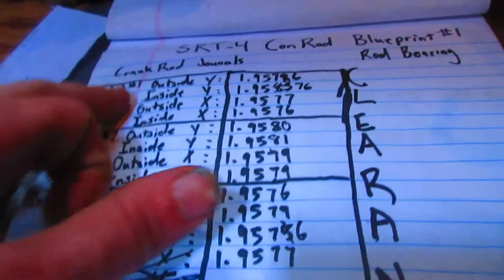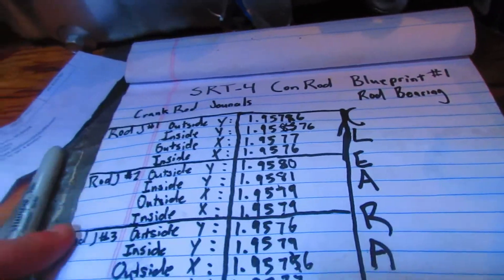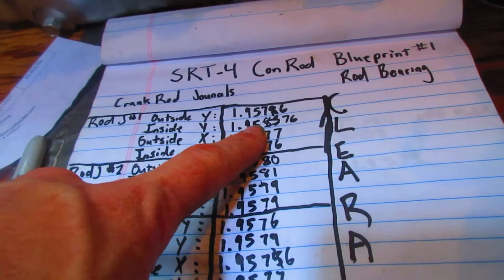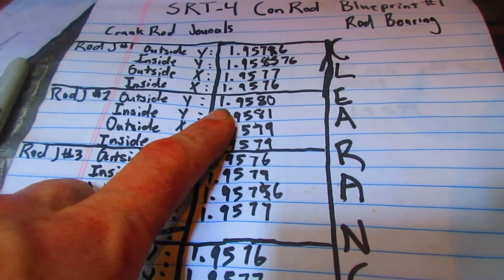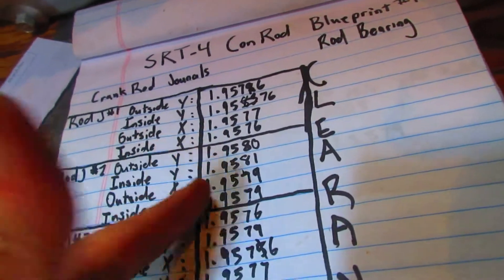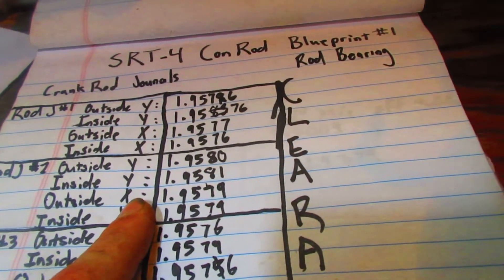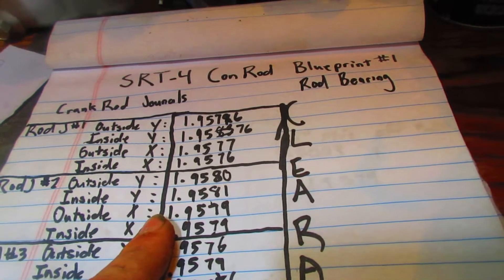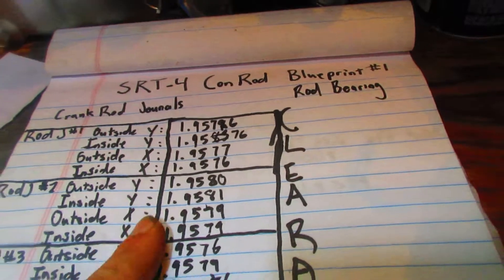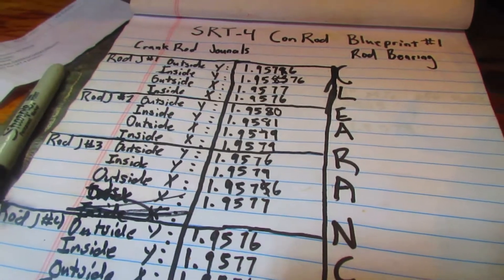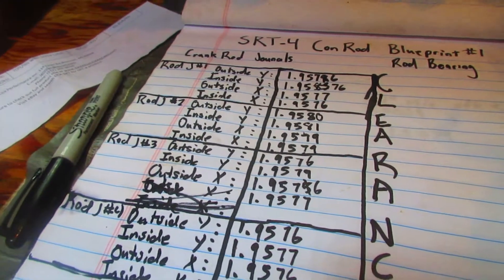So, you're going to go ahead and do the same exact thing that you did with the main bearings and measure an X and Y axis of each rod journal. And I was getting 1.9576 to 1.9580, and 8.1 actually is the biggest that I got. But, this is only the first time, or the first series of measurements. So, I'm going to do this whole process four or five more times until I'm set on a clearance. But, I'm just giving you guys an idea of how it works.